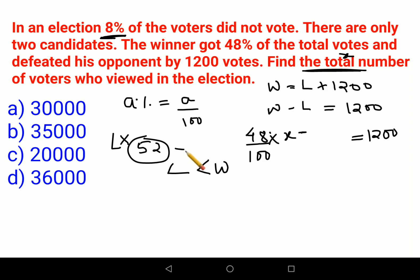So here we would have to do 52 minus 8. So now I can say that the losing candidate has 44%, right? Now this can be written as 44 upon 100 into x. Since the denominators are same, I can take x and 100 common and I will do 48 minus 44 equals 1200.